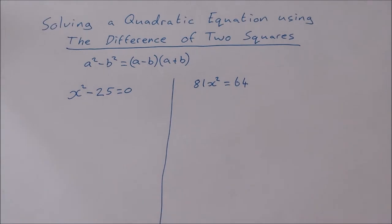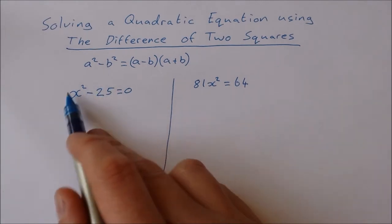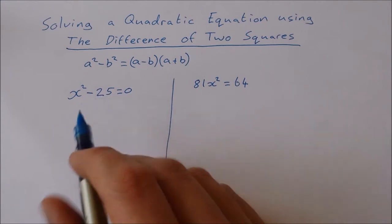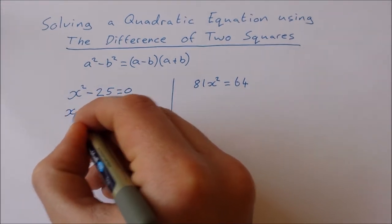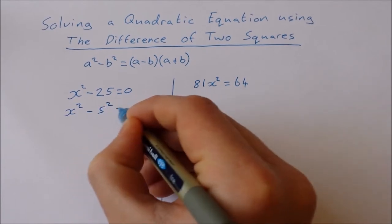So starting with x² minus 25 equals 0. First of all, we should write this as two squares, so that's going to be x² minus 5² equals 0.